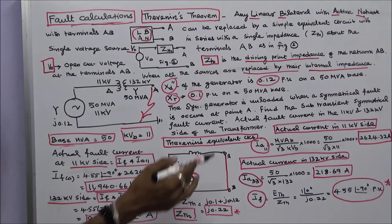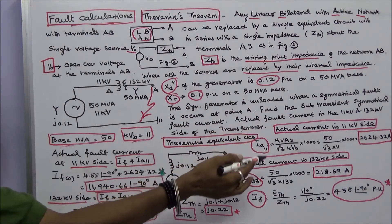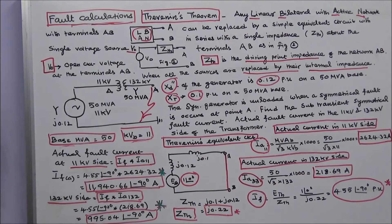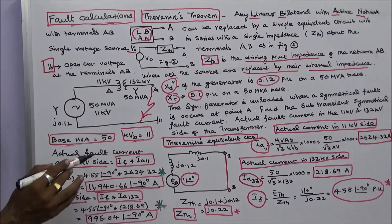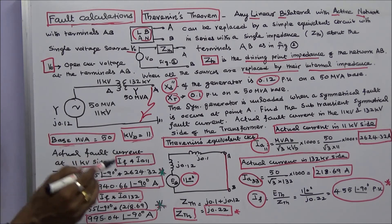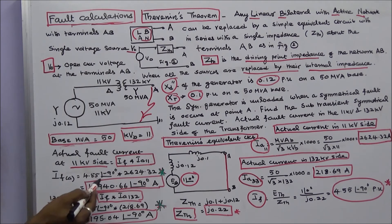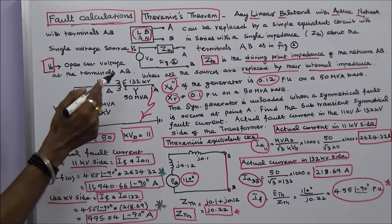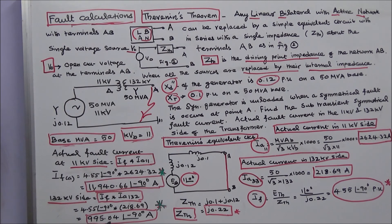Knowing the fault current and the actual base currents, I can calculate the actual fault current in the 11 kV side and the 132 kV side. Actual fault current in the 11 kV side is equal to per unit fault current into actual base current in the 11 kV side. Fault current is 4.55∠−90°, and actual base current in the 11 kV side is 2624.32 Amps. Therefore actual fault current in the 11 kV side is 11940.66∠−90° Amps. Similarly for the 132 kV side: fault current 4.55∠−90° into actual base current 218.69 Amps gives actual fault current in the 132 kV side as 995.04∠−90° Amps.